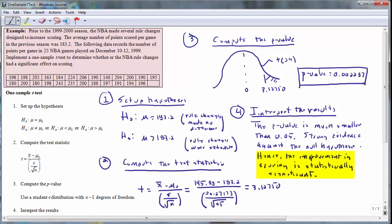For a more precise interpretation of the p-value, you would assume that the null hypothesis is true, since the p-value is computed under this assumption. If, in fact, the rule change has made no difference, then there is only a .22% chance of obtaining an average score of 195.88 or more.